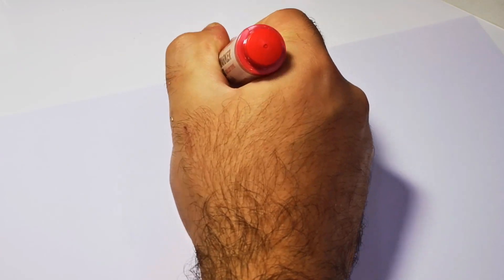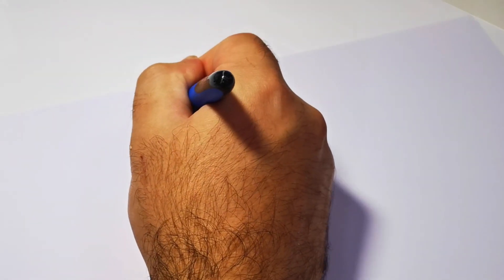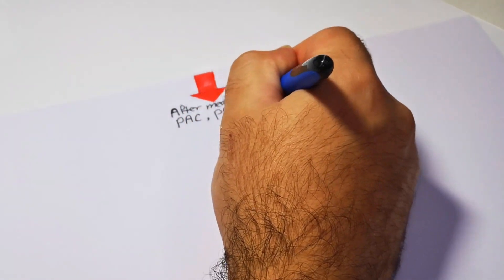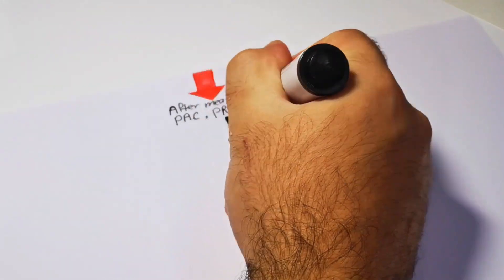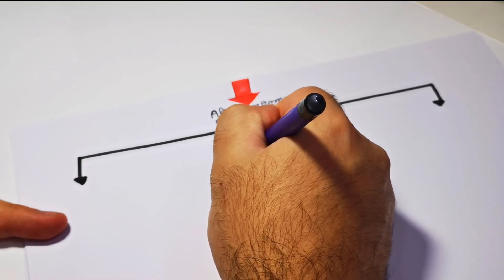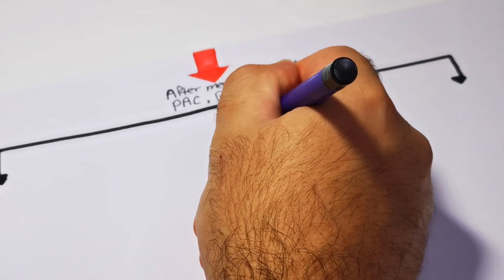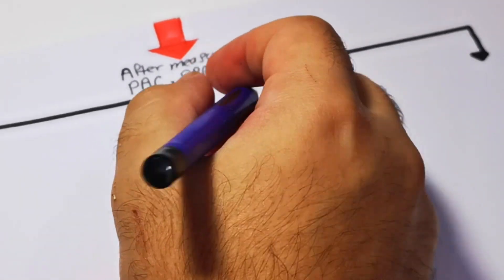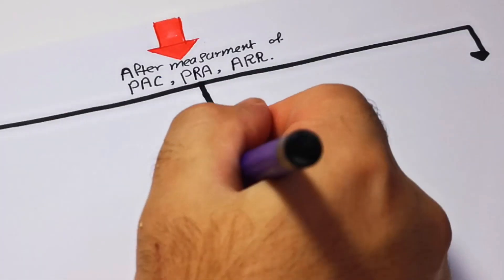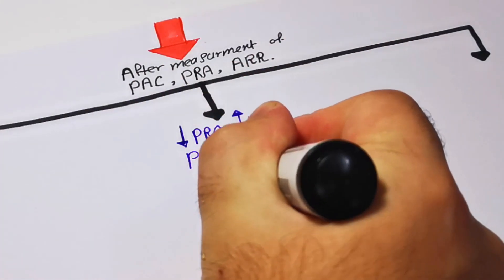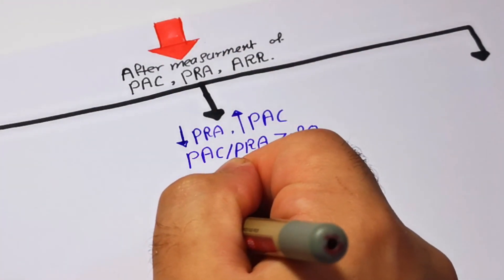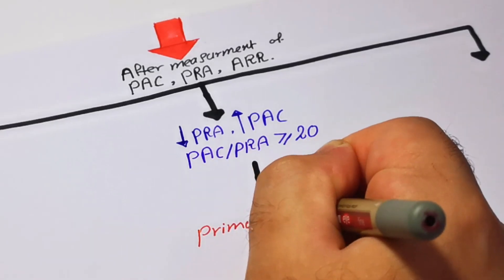To interpret the results: in a patient with hypertension and hypokalemia, we measure plasma aldosterone concentration, plasma renin activity, and calculate the aldosterone-renin ratio. If the patient has increased plasma aldosterone concentration, decreased plasma renin activity, and an aldosterone-renin ratio greater than 20, this patient has primary hyperaldosteronism.